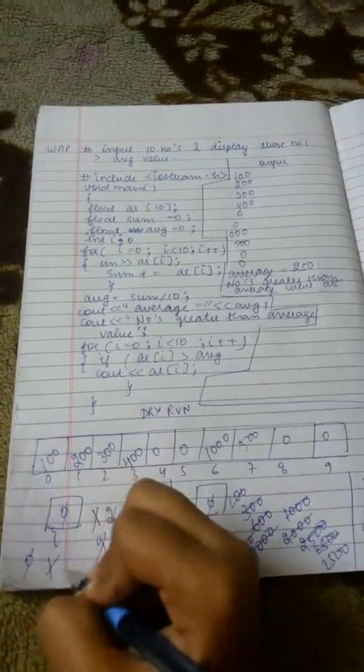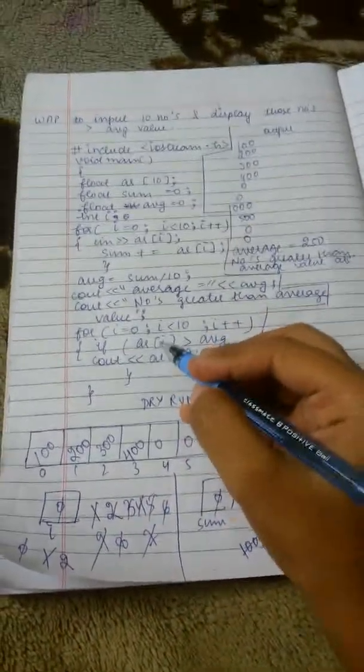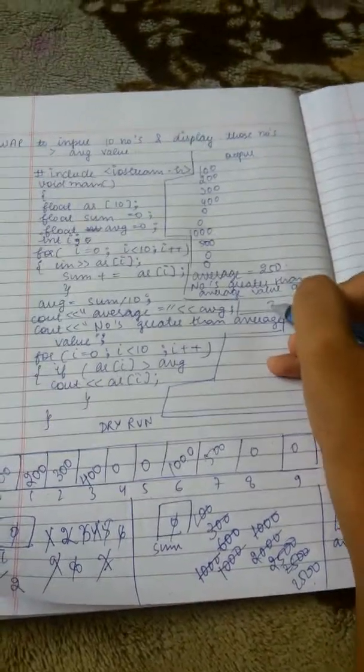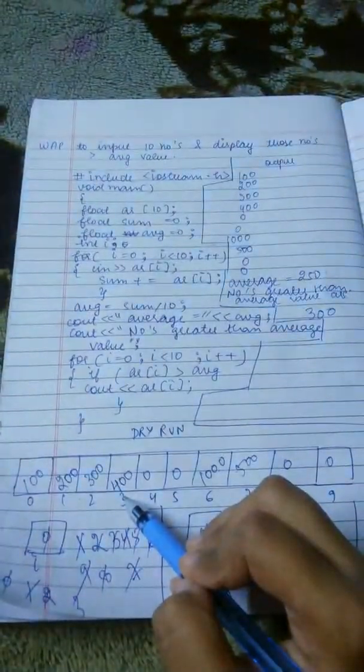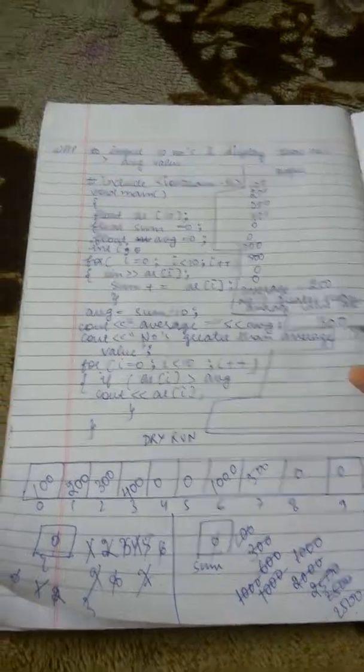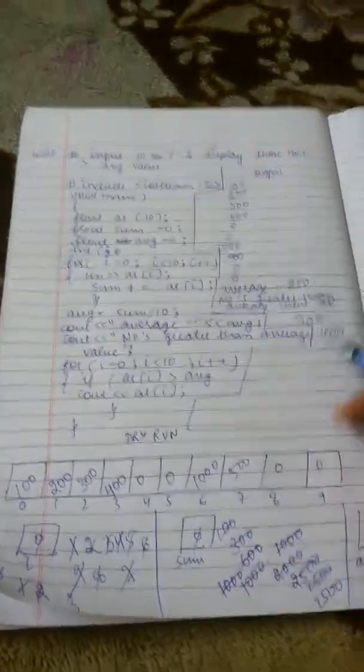Now it will get incremented to 2. ar[2], 300 is greater than 250? Yes. The number will get displayed. Now again 3, 400 it is. 400 is greater than 250? Yes. It will get displayed. 4, no display because 0 is not greater than 250.